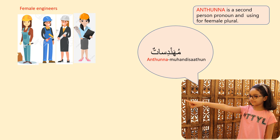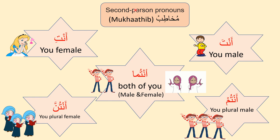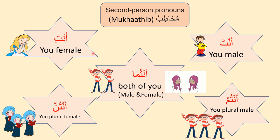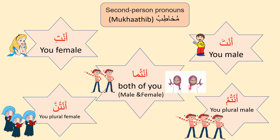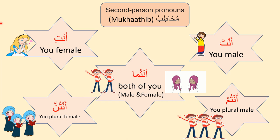When more female engineers are in front of me and I want to say 'you are female engineers,' I use Antunna. 'Antunna Mohandisatun.' Antunna is the second person pronoun for female plural. To revise: Anta — you, male singular; Anti — you, female singular; Antuma — both of you, male and female; Antum — you, plural male; Antunna — you, plural female.